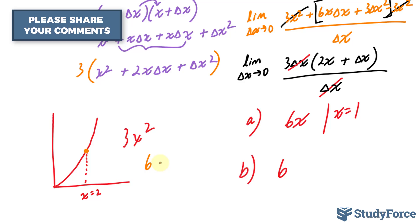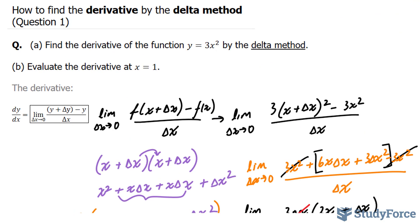And that's precisely the reason why finding the derivative is important, that it allows us to find the rate of change at any point along the curve. And so there you have it. That is how to find the derivative by the delta method. Make sure to watch question 2 for a more complicated example.